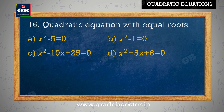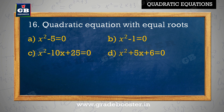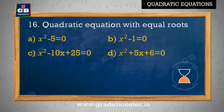Quadratic equation with equal roots: A. x square minus 5 equal to 0, B. x square minus 1 equal to 0, C. x square minus 10x plus 25 equal to 0, D. x square plus 5x plus 6 equal to 0.